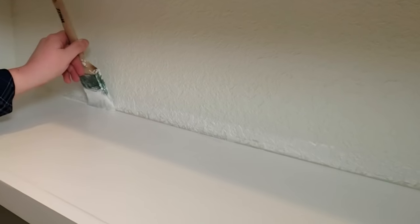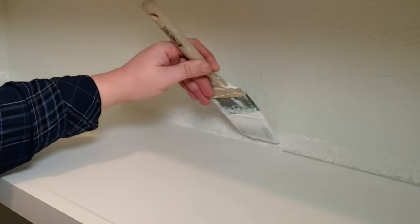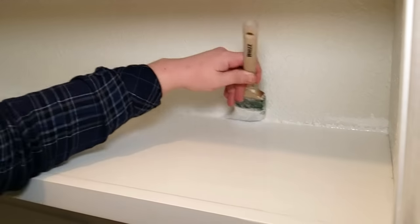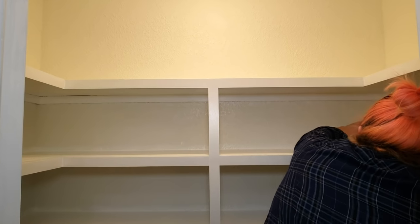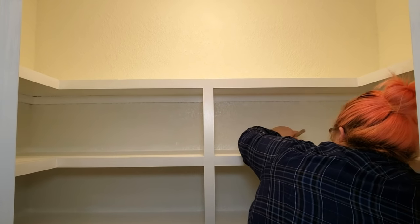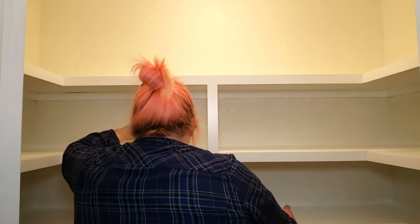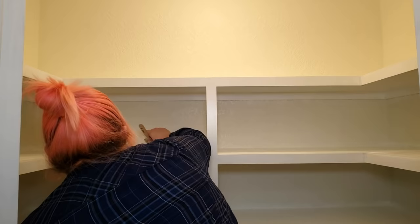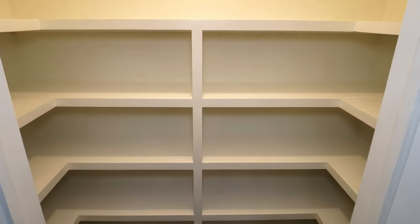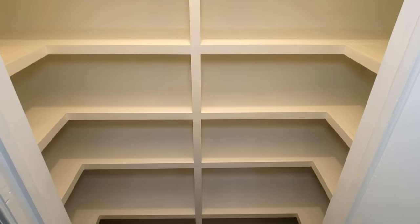When the caulk dried, I rolled on the second coat of paint and I used a brush to cut in those back edges. Once that dried, I went back in with my brush and the wall color alabaster. I touched up the walls and I cut in the edges along the wall where it meets the shelf. After this, I just had to wait for the paint to dry and my pantry shelves are complete.